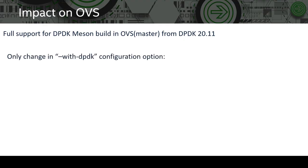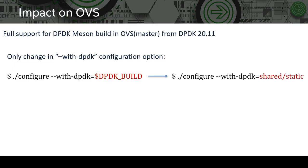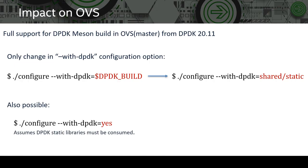So overall, what's the impact on OVS and what has changed? There is only one change in terms of configuring OVS to build with DPDK and the rest remains unchanged. Previously we used to specify the DPDK build directory for the with-dpdk option. Now we specify whether to use static or shared DPDK libs since the paths to these are already known via the pkg-config tool. Users can also set the with-dpdk option to yes, in which case DPDK static libraries will be used. Note that full support for DPDK built with Meson in OVS DPDK latest branch is from 2008, and 2011 for the master branch.